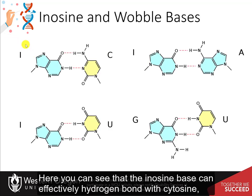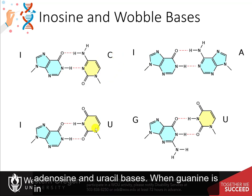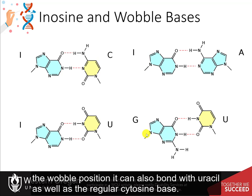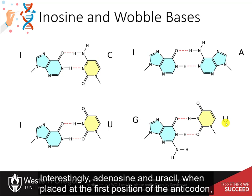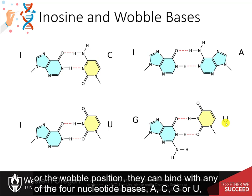The inosine base can effectively hydrogen bond with cytosine, adenosine, and uracil bases. When guanine is in the wobble position, it can also bond with uracil as well as the regular cytosine base. Interestingly, adenosine and uracil, when placed at the first position of the anticodon — the wobble position — can bind with any of the four nucleotide bases: A, C, G, or U.